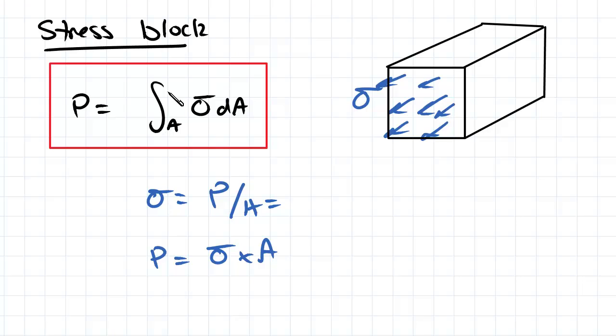Essentially what this formula is saying is that the equivalent axial force is equal to the volume of our stress distribution, because we're acting over an area A and we've got a height. So the base area is A and then we've got a height of sigma, which is our stress.